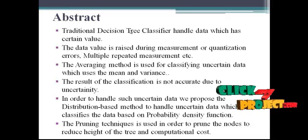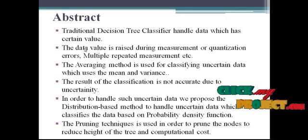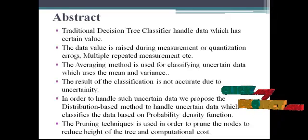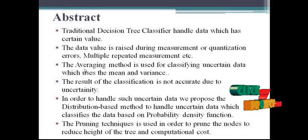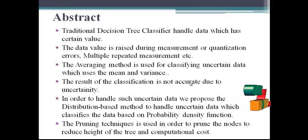The traditional decision tree classifier handles data which has certain values, but the value of data keeps changing due to repeated measurement or quantization errors. The averaging method classifies uncertain data using means and variance, but the result of the classification is not accurate due to uncertainty.